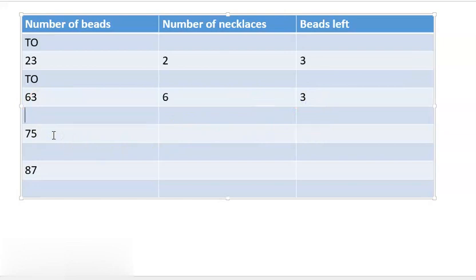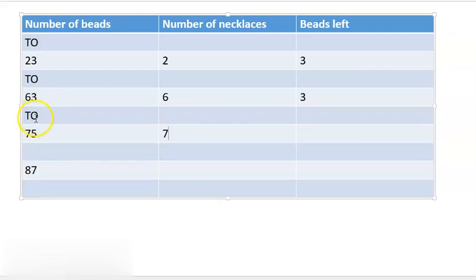Now the next number is 75 — she is having 75 beads. Let's see how many necklaces she can make. We write T for 10s and O for 1s. On the T place we have the number 7, so number of necklaces are 7. And on the place of 1s we have 5, meaning the beads left are 5.